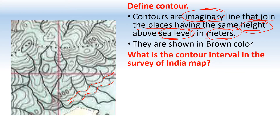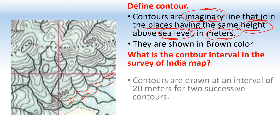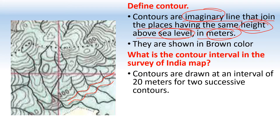What is a contour interval in the Survey of India map? Always remember it is 20 meters. Contours are drawn at an interval of 20 meters, which is the difference between two successive contour lines.